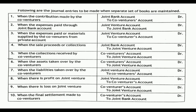Fifth entry: when collections are received by the co-ventures individually — Co-ventures Account Dr. to Joint Venture Account. Sixth entry: when assets are taken over by the co-venture at the end of the joint venture — Co-ventures Account Dr. to Joint Venture Account, recording the name of the co-venture who takes over assets. Seventh entry: when liabilities are taken over by the co-venture — Joint Venture Account Dr. to Co-ventures Account.